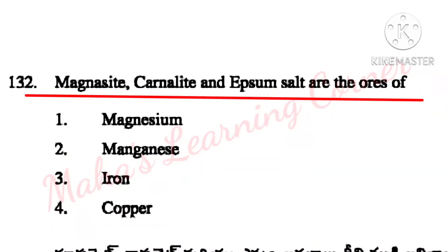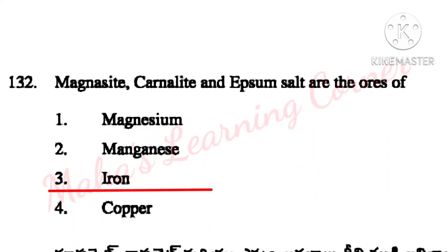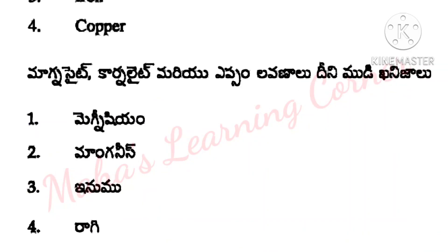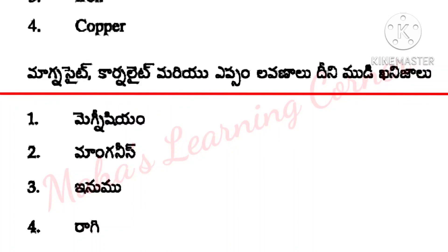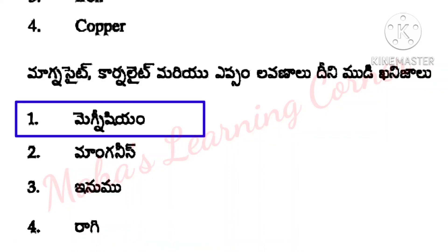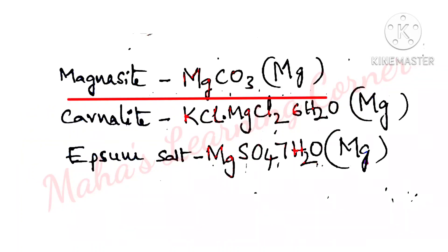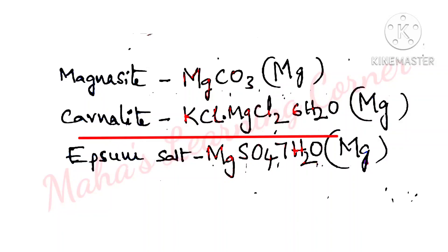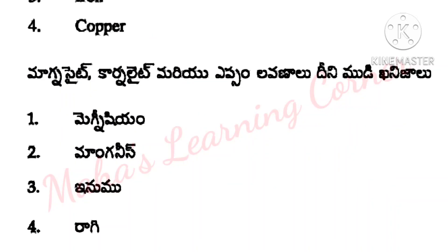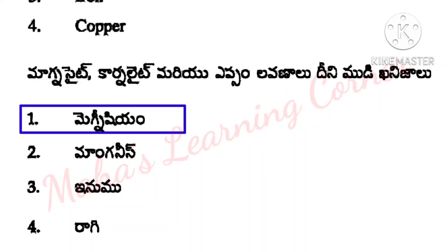Magnesite, Carnalite and Epsom salt are the ores of? Options: Magnesium, Manganese, Iron, Copper. Correct answer: Option 1 — Magnesium. Magnesite is MgCO₃, Carnalite is KCl·MgCl₂·6H₂O, and Epsom salt is MgSO₄·7H₂O — all three are ores of Magnesium.